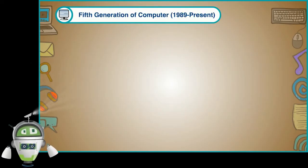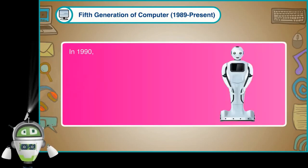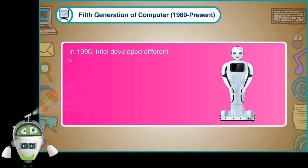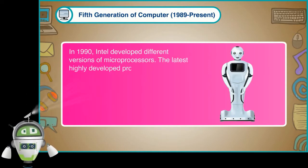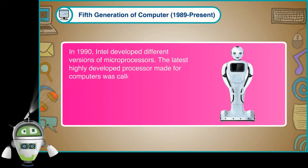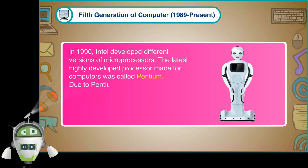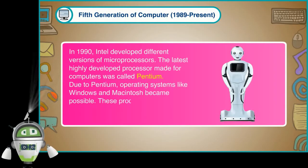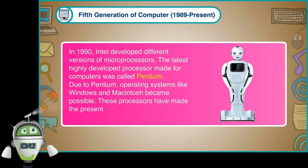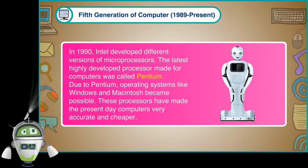Fifth Generation of Computer 1989-Till Present. In 1990, Intel developed different versions of microprocessors. The latest highly developed processor made for computers was called Pentium. Due to Pentium, operating systems like Windows and Macintosh became possible. These processors have made the present-day computers very accurate and cheaper.